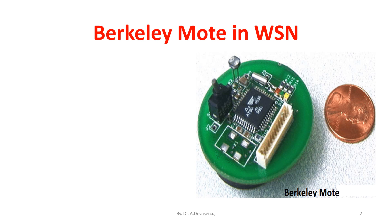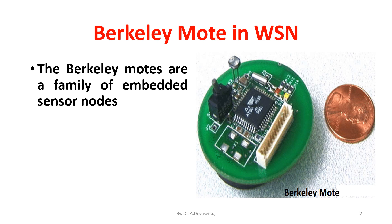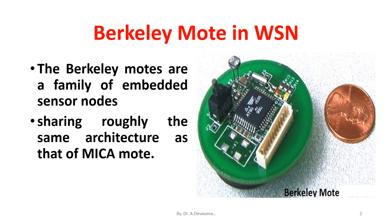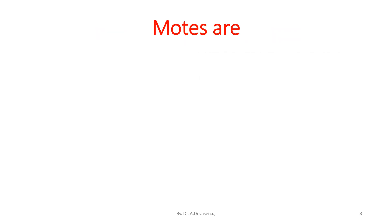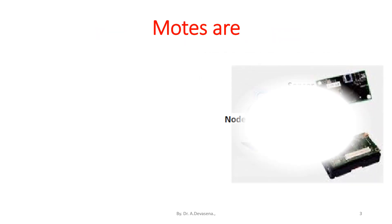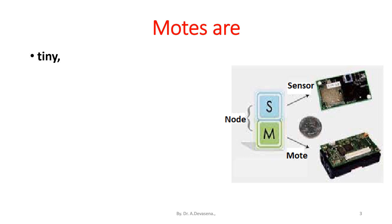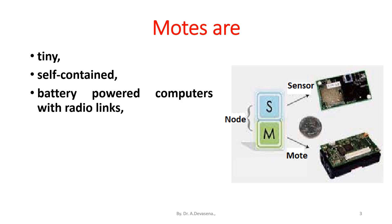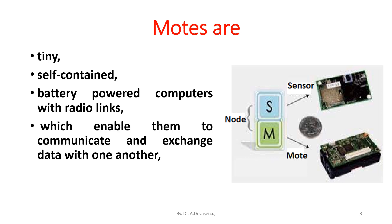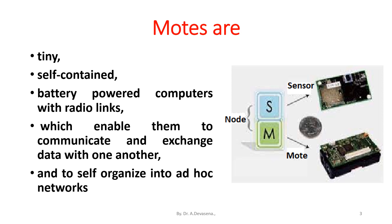The Berkeley Motes are a family of embedded sensor nodes sharing roughly the same architecture as that of Mica Mote. Motes are tiny, self-contained, battery-powered computers with radio links which enable them to communicate and exchange data with one another and to self-organize into an ad-hoc network.